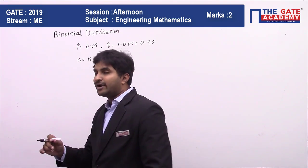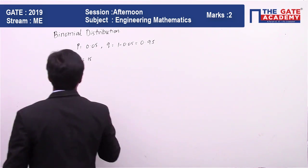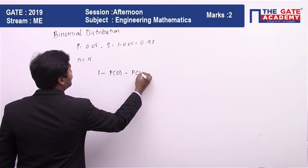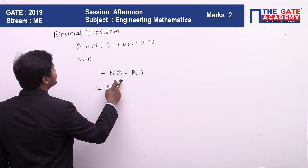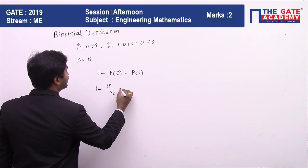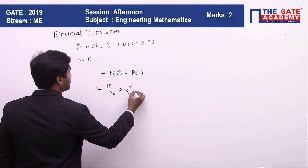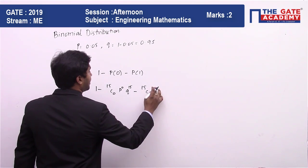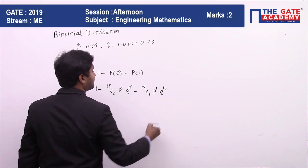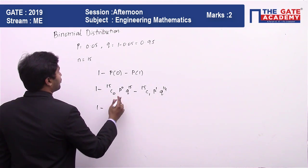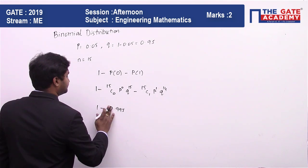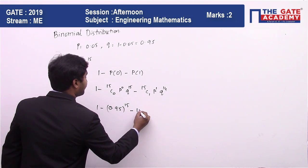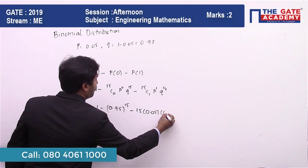Now, the probability that at least two are going to be defective is 1 minus probability of 0 defective minus probability of 1 defective. Probability of 0 defective is 15C0 p^0 q^15 minus 15C1 p^1 q^14. So 1 minus 0.95^15 minus 15 times 0.05 times 0.95^14.